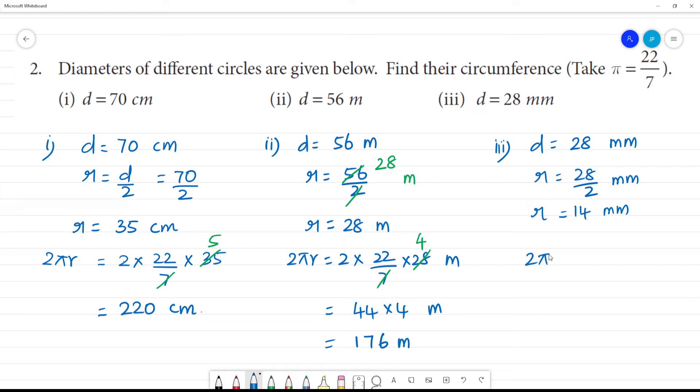Then, circumference is 2πr is equal to 2 into 22 by 7 multiplied by 14. Cancel: 1 times 7 is 7, 2 times 7 is 14.